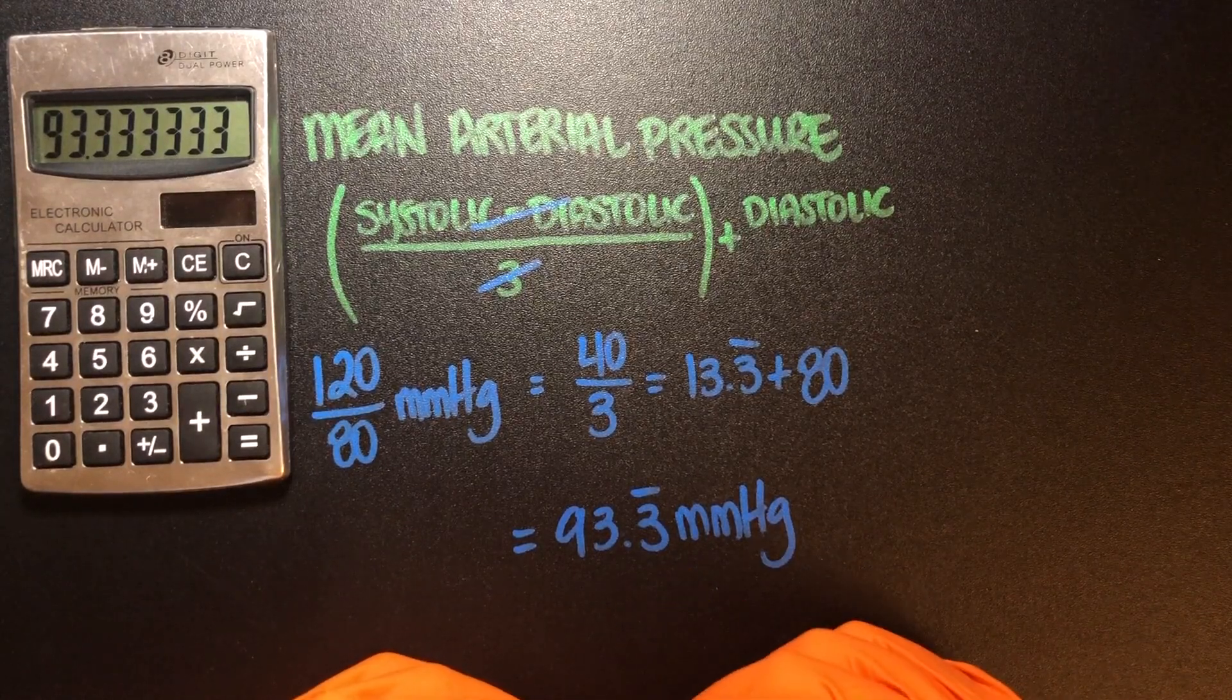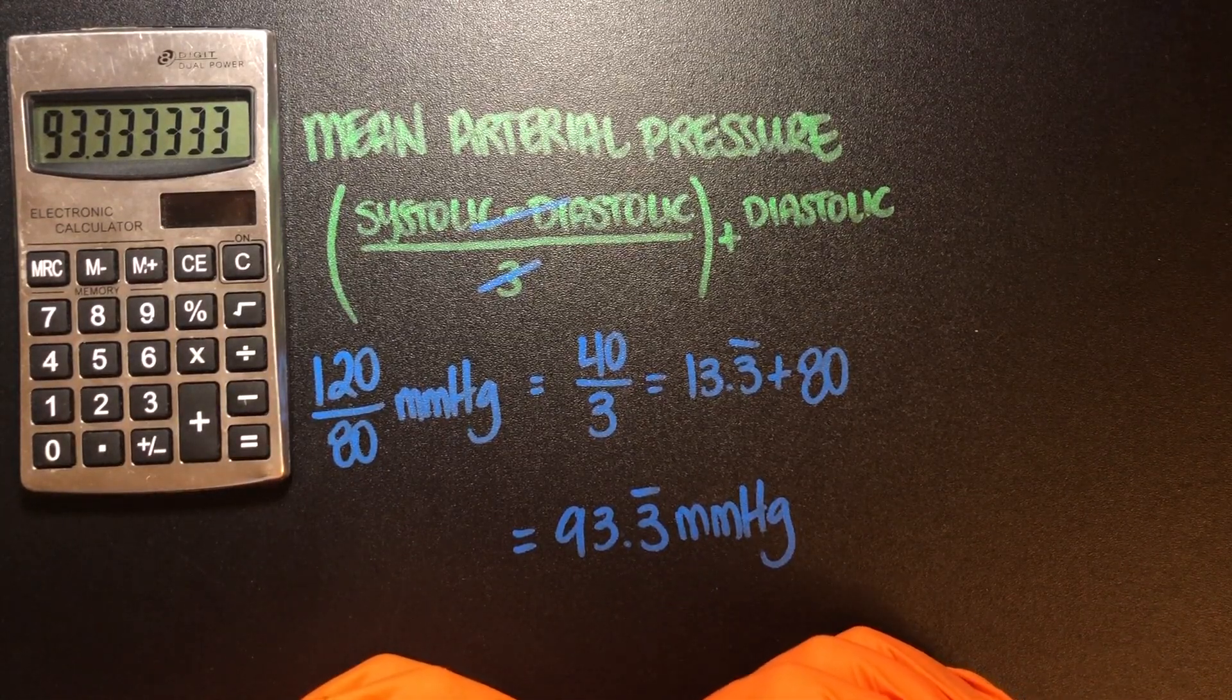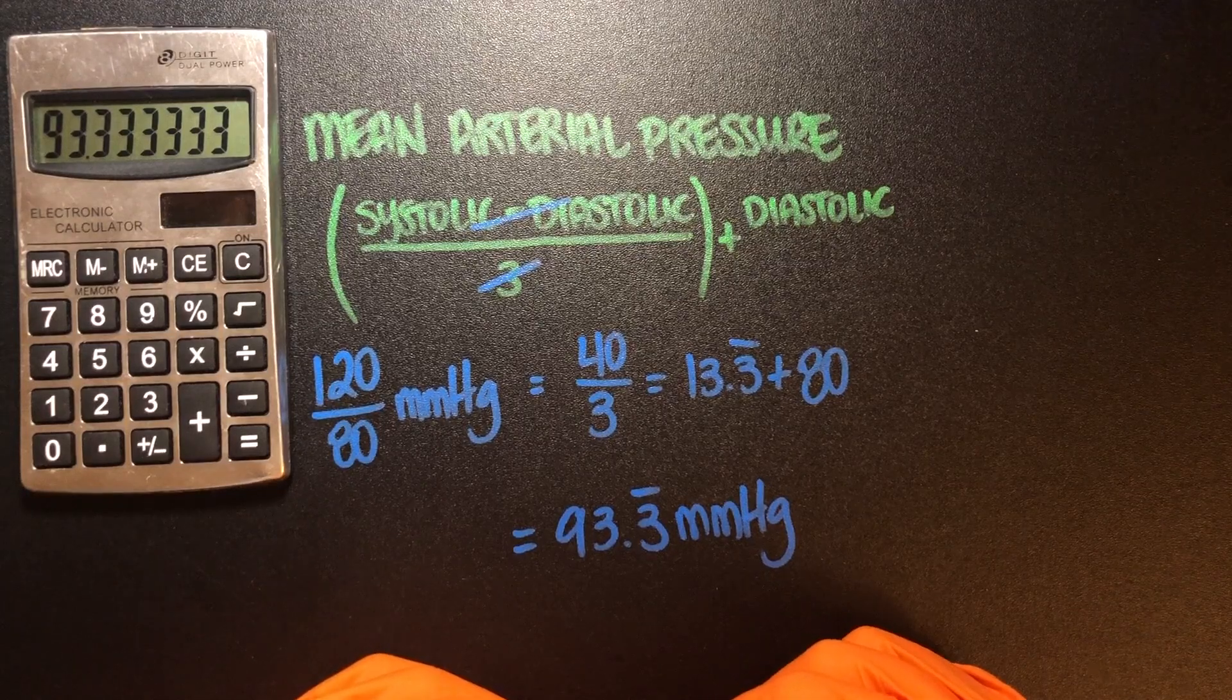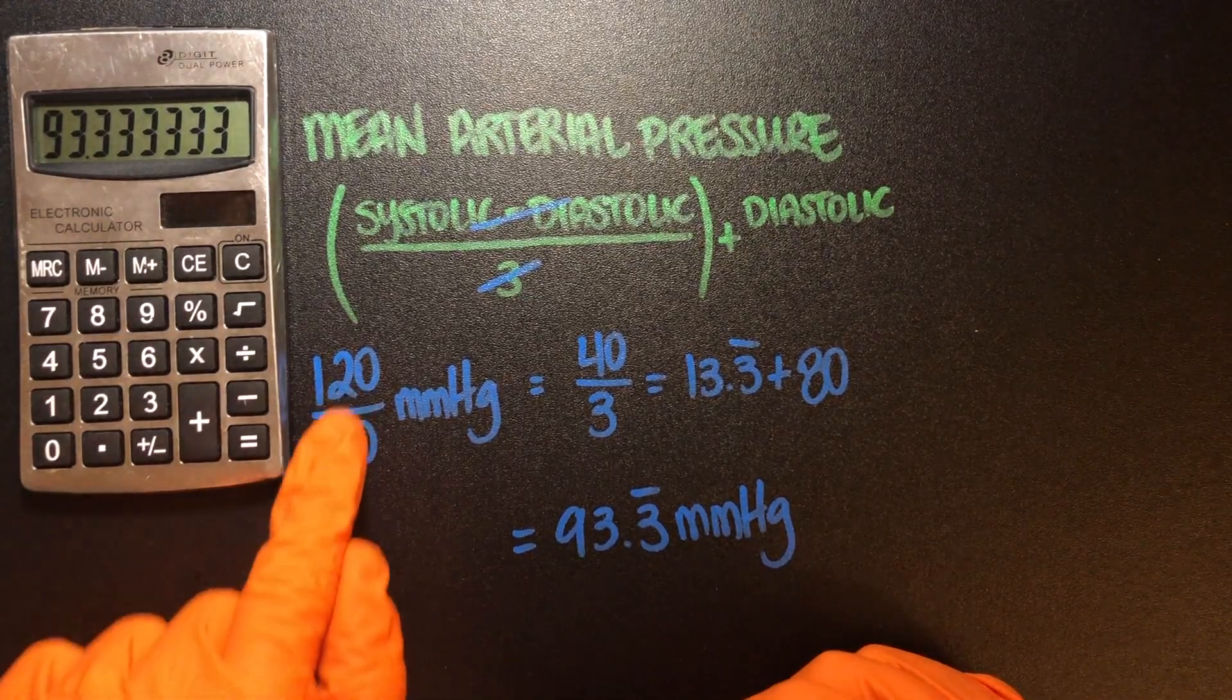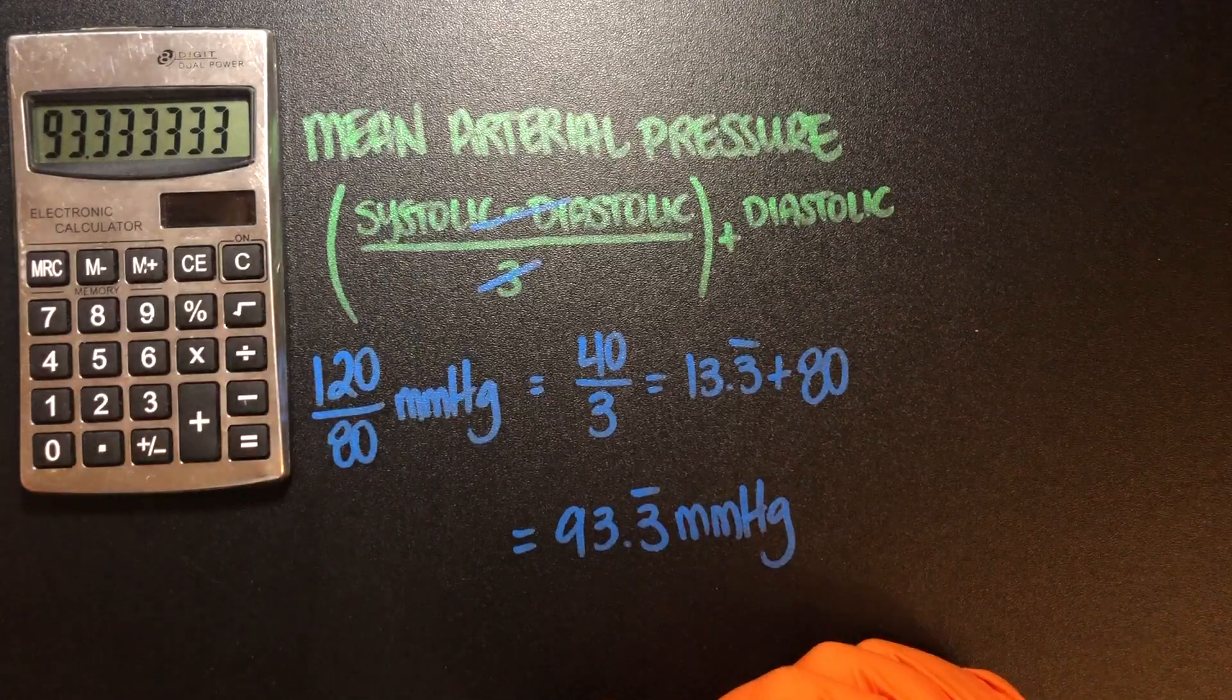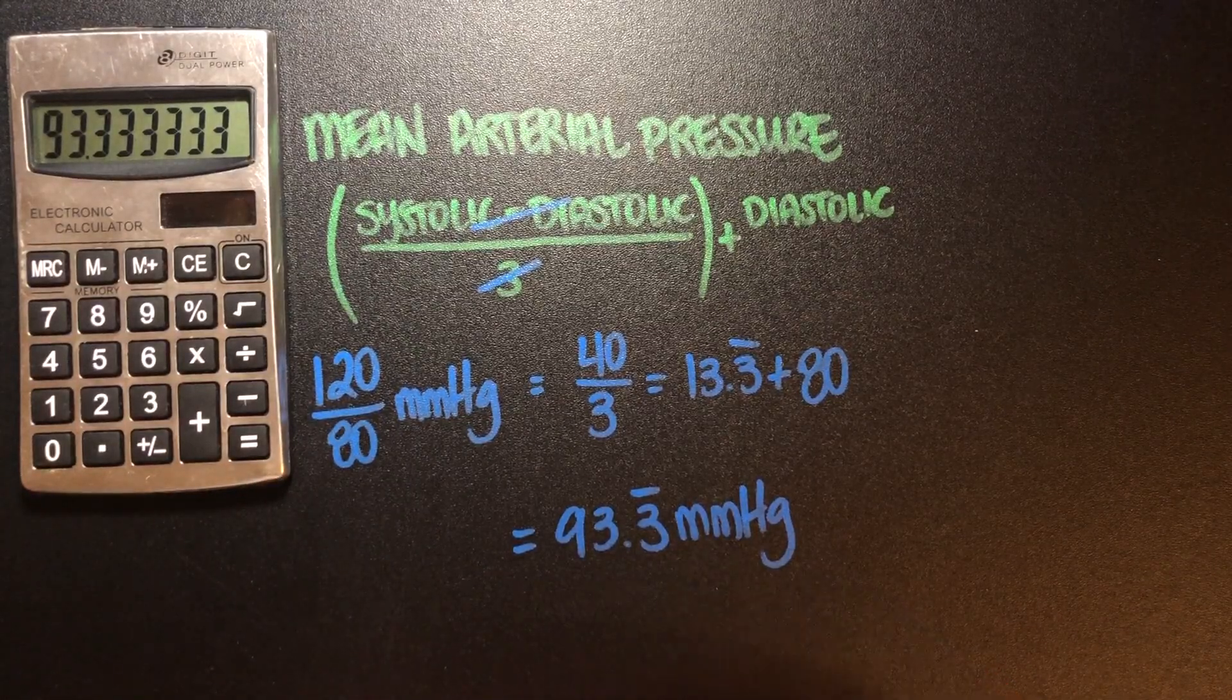So hopefully that helps you with calculating mean arterial pressure. I recommend that you just make up some other numbers. Follow this step-by-step and you'll be good to go.